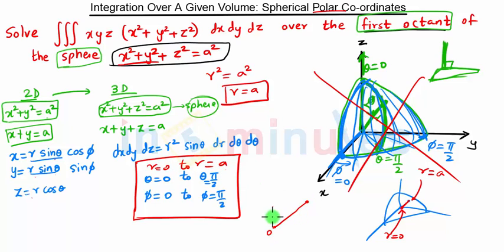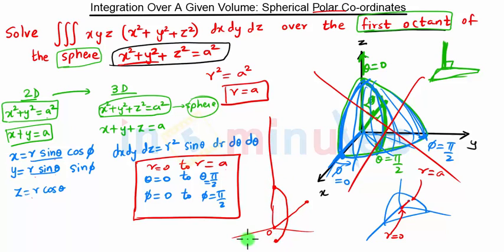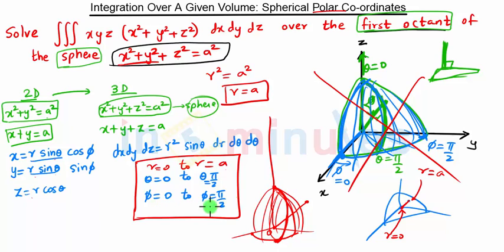You can directly write these limits without drawing the diagram. For the first octant: r goes from 0 to a (one ray from the origin to the sphere surface), θ goes from 0 to π/2 (from the z-axis down to the xy-plane), and φ goes from 0 to π/2 (rotating to cover the first octant volume). Now we substitute these limits and find x² + y² + z².